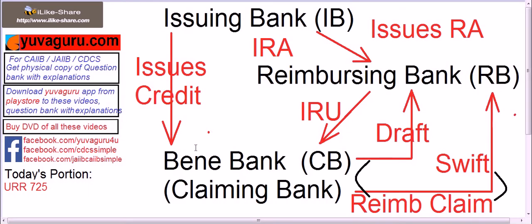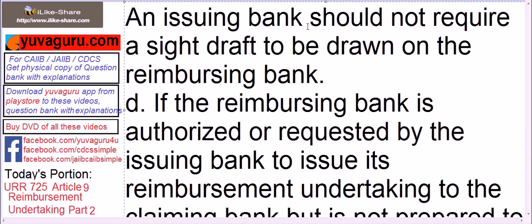Before going ahead, let me clarify what we are dealing with. We are dealing with the IRA - when the IRA is issued by the issuing bank to the reimbursing bank, to further give the IRU to the claiming bank. We are right now looking at the terms and conditions of the IRA. Remember: an issuing bank should not require a sight draft to be drawn on the reimbursing bank, as also explained in my RA article video.